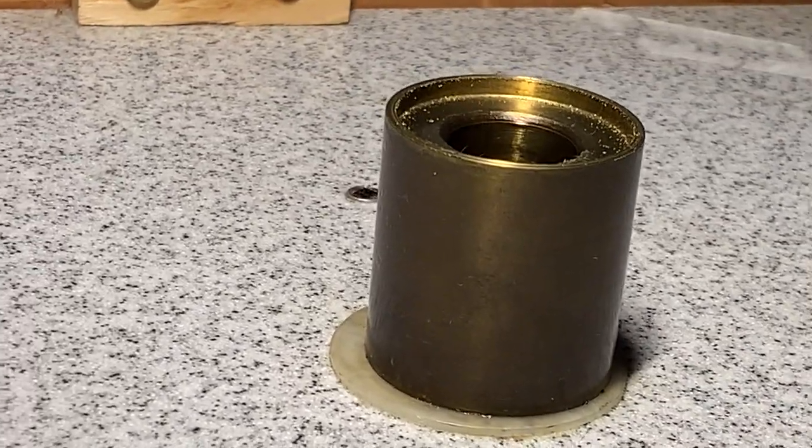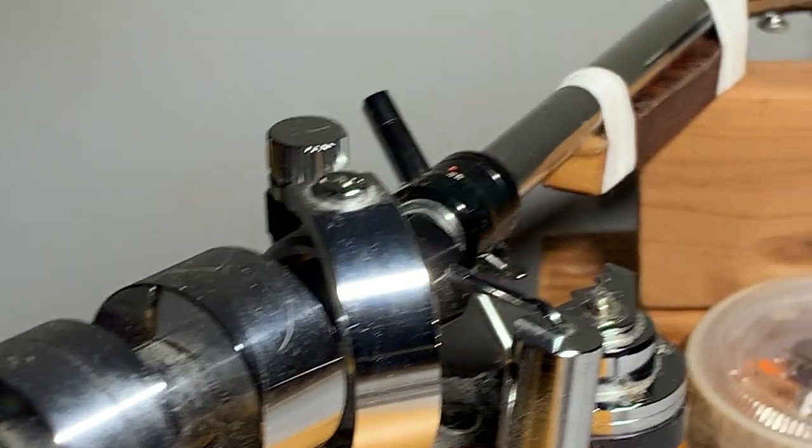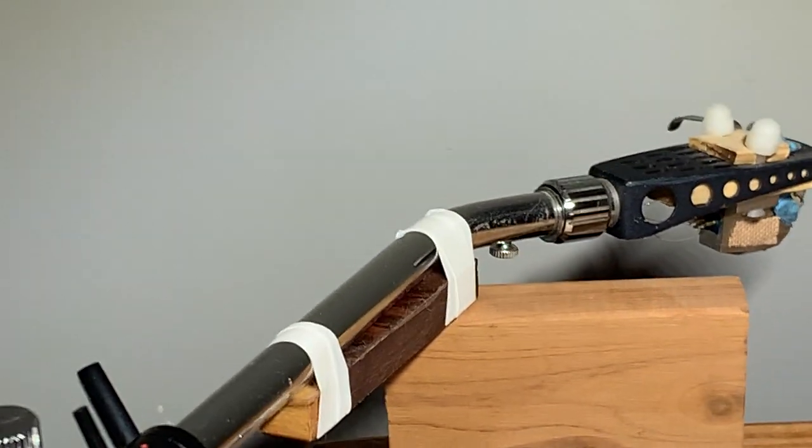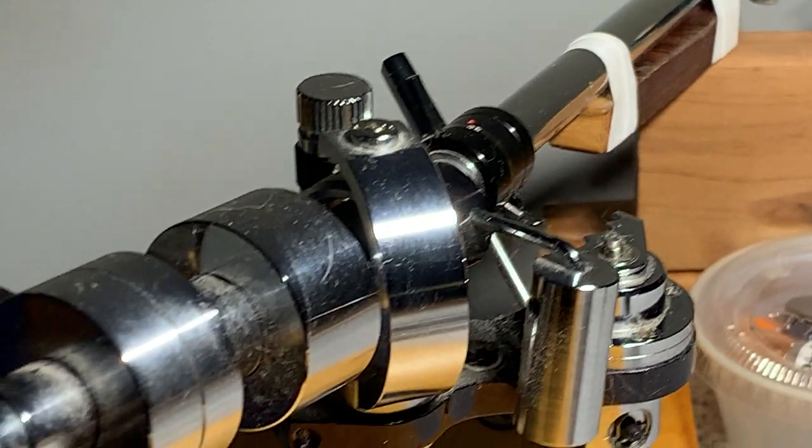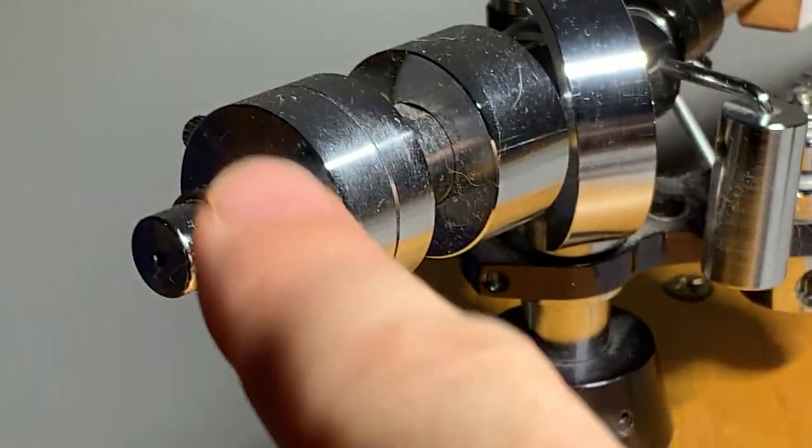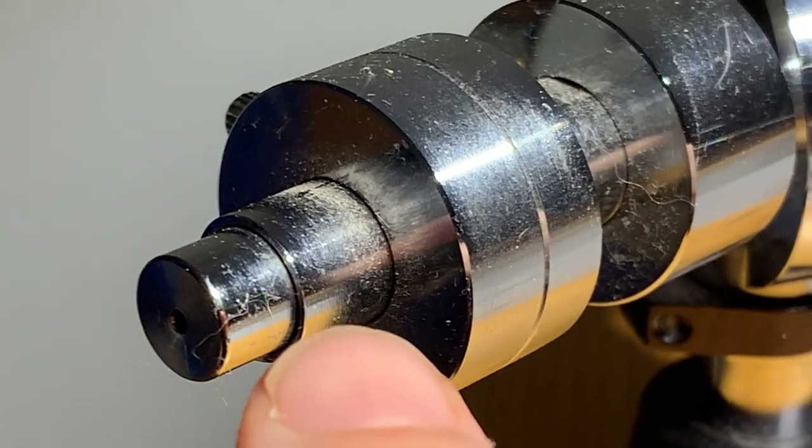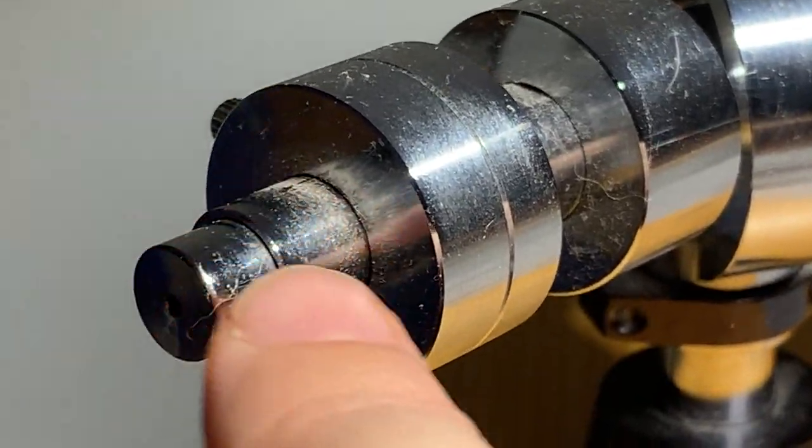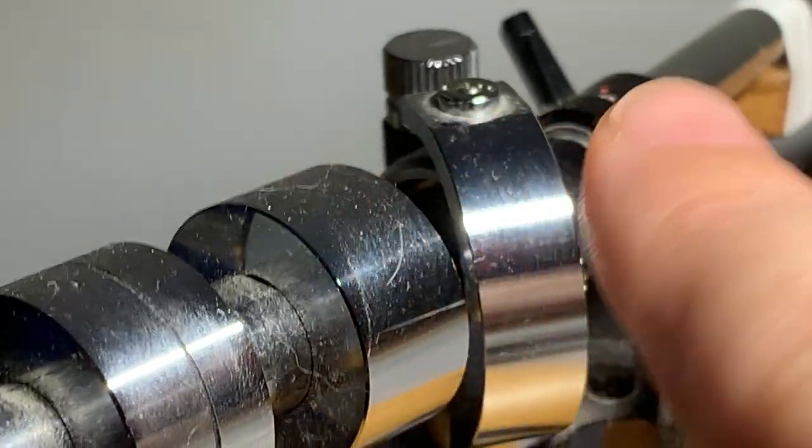Also, I could see with the light that my tone arm was super dirty, with tons of dust on it. I cleaned it up, but actually I could do a much better job cleaning. You can see there with the light that there's some dust still sitting there and there.